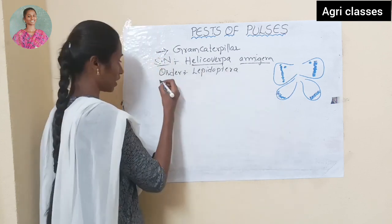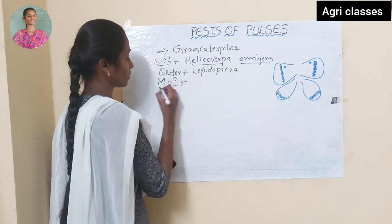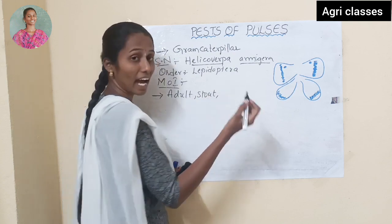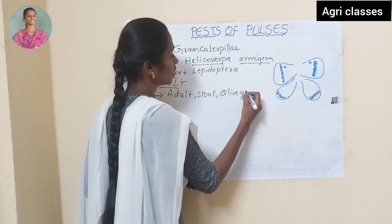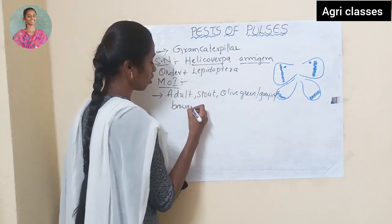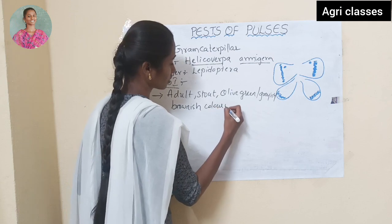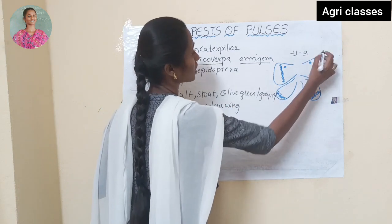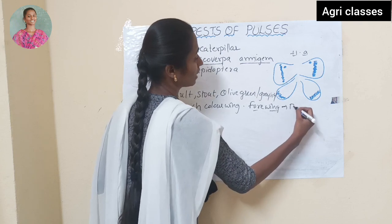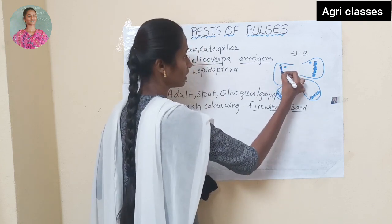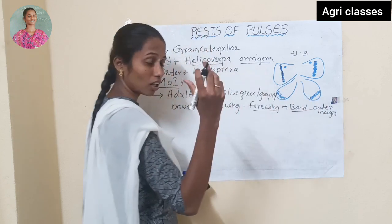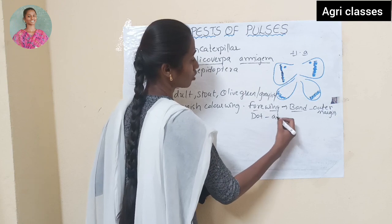First I will discuss about marks of identification — how we will identify the pest in the field. These adults are stout in nature and have olive green, greyish, or brownish coloured wings. Four wings have a band-like structure at the outer margin, and they have one spot or dot at the costal margin.